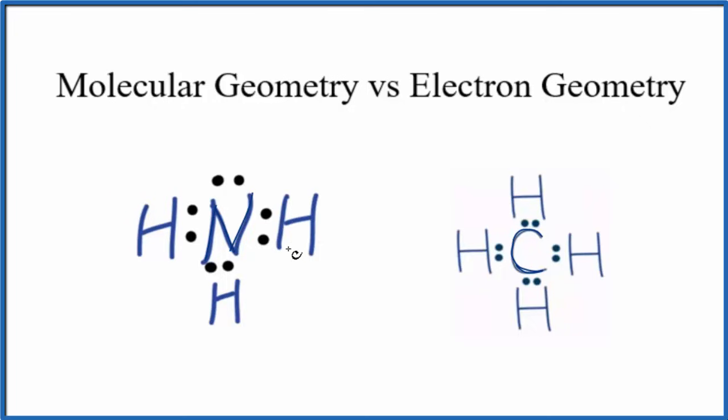For NH3, we'll start with our Lewis structure. We have one, two, three hydrogens bonded to the nitrogen, and then we have one lone pair. That lone pair is important because it's pushing down the hydrogen atoms.